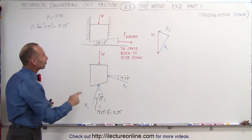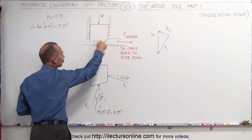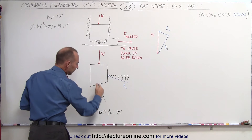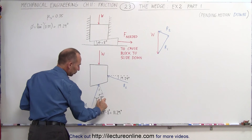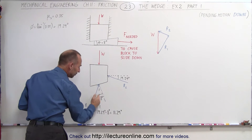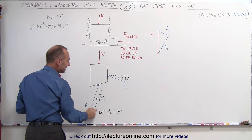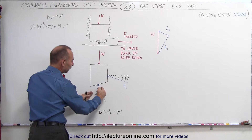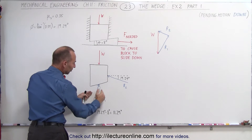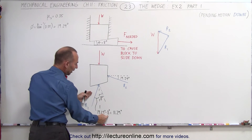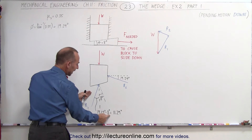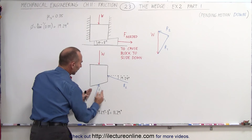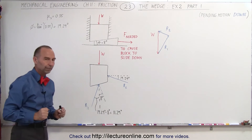We also have friction between the block and the wedge. The normal force will be perpendicular to the surface, which is at an angle of 8 degrees with the vertical. We have a 19.29 degree angle between the normal force and the reaction force, but since it's on the other side of the normal, we subtract the 8 degrees from 19.29 and get an angle of 11.29 degrees relative to the vertical.